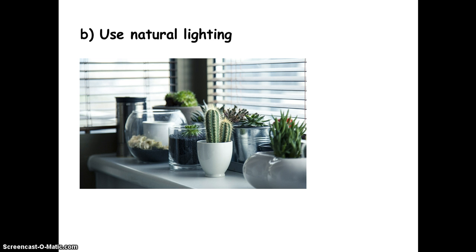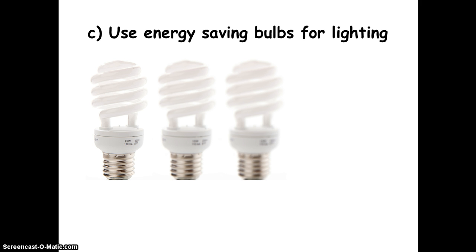Another way is to use energy-saving bulbs for lighting. You need to know that there are different types of light bulbs. Ordinary light bulbs consume a lot of electricity, whereas energy-saving bulbs use very little power. They usually come in different styles, and there will be a label on the packaging box which says energy-saving. The picture shown is just one example of how they usually look.